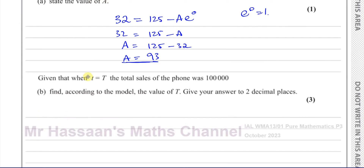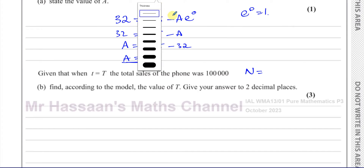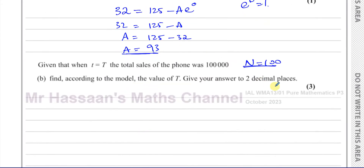Now for part b: given that when t equals capital T, the total sales of the phones was 100,000 — that means n is equal to 100, because n is in thousands. So you have to be careful; I'm sure the examiner's report will mention that many people used n as 100,000. n equals 100 because you divide by 1000, so if n is 100, that means 100,000 phones were sold.